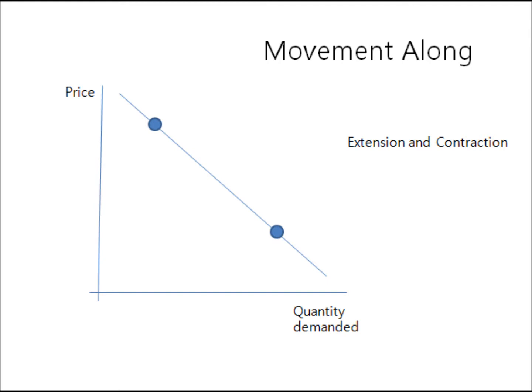As you can tell from the words, extension is when something increases and contraction is when something decreases. In this case, it started at point one and ended up at point two. At point one, this much was demanded, and at point two, this much was demanded. So demand increased. That's called expansion of demand.